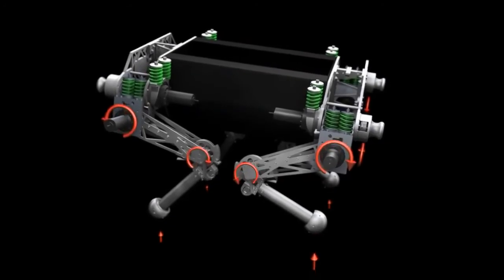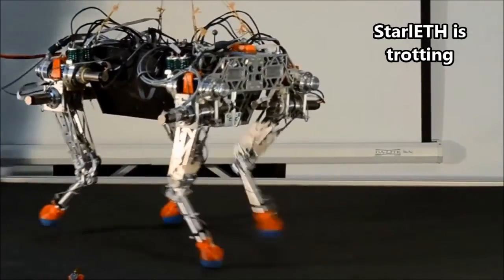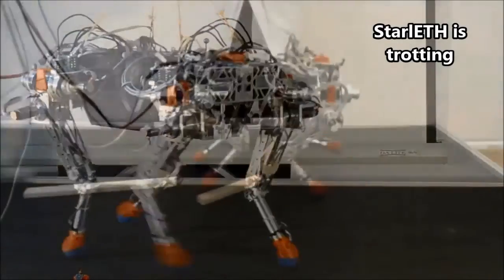This feedback provides the quadruped with the stability in a range of environments. Here, Starleth can be seen performing a trot and traversing over obstacles.